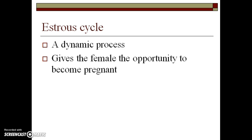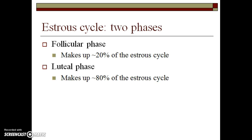The estrous cycle is a very dynamic process and each estrous cycle gives the female the opportunity to become pregnant. The estrous cycle is comprised of two phases: the follicular phase and the luteal phase. The follicular phase makes up about 20% of the estrous cycle, while the luteal phase makes up about 80% of the estrous cycle.